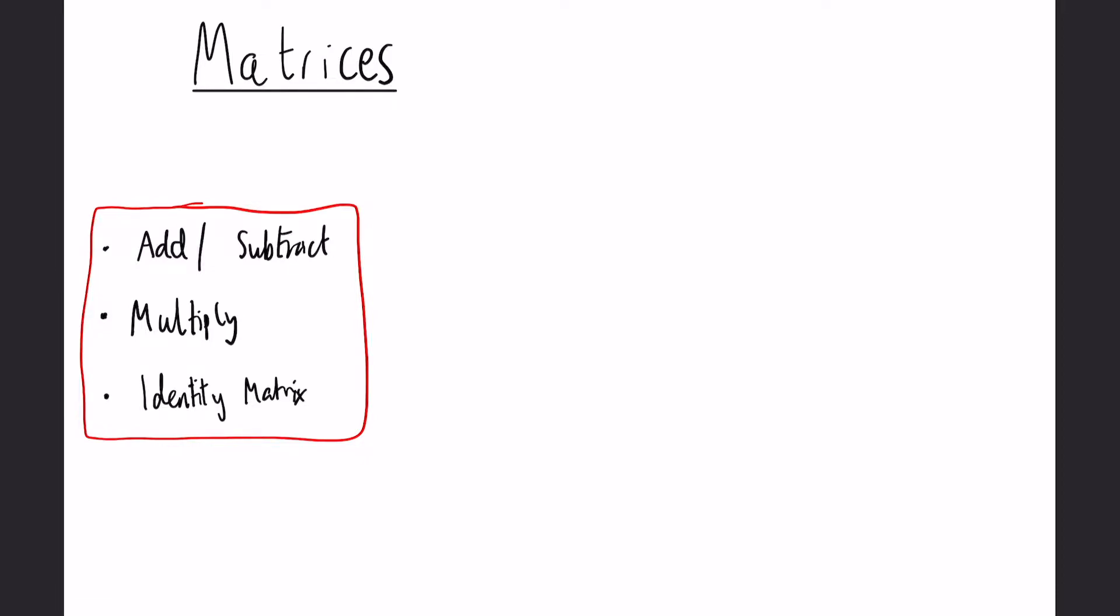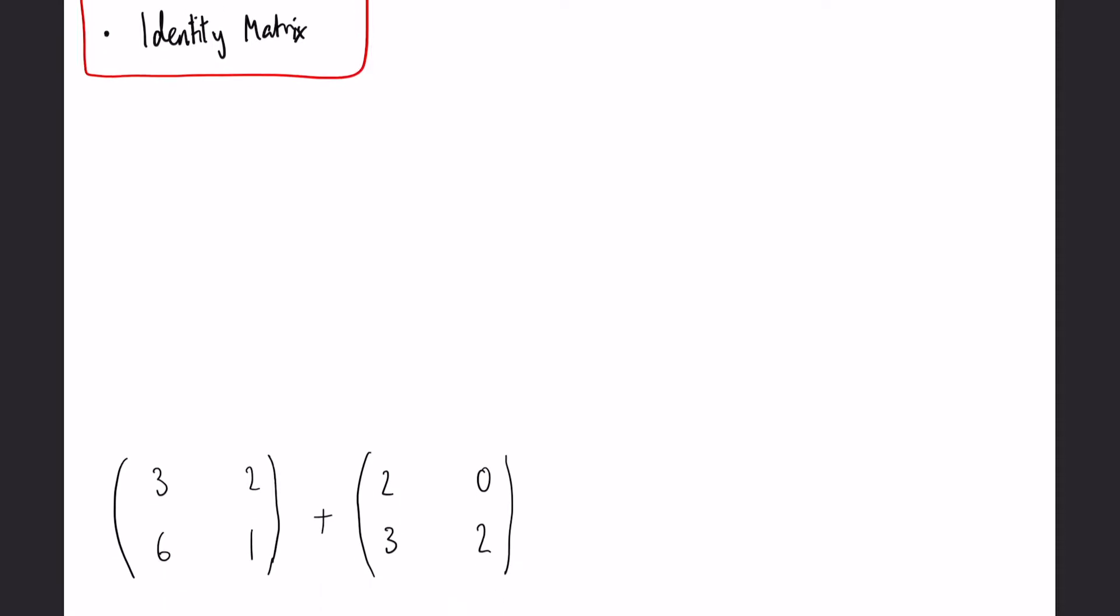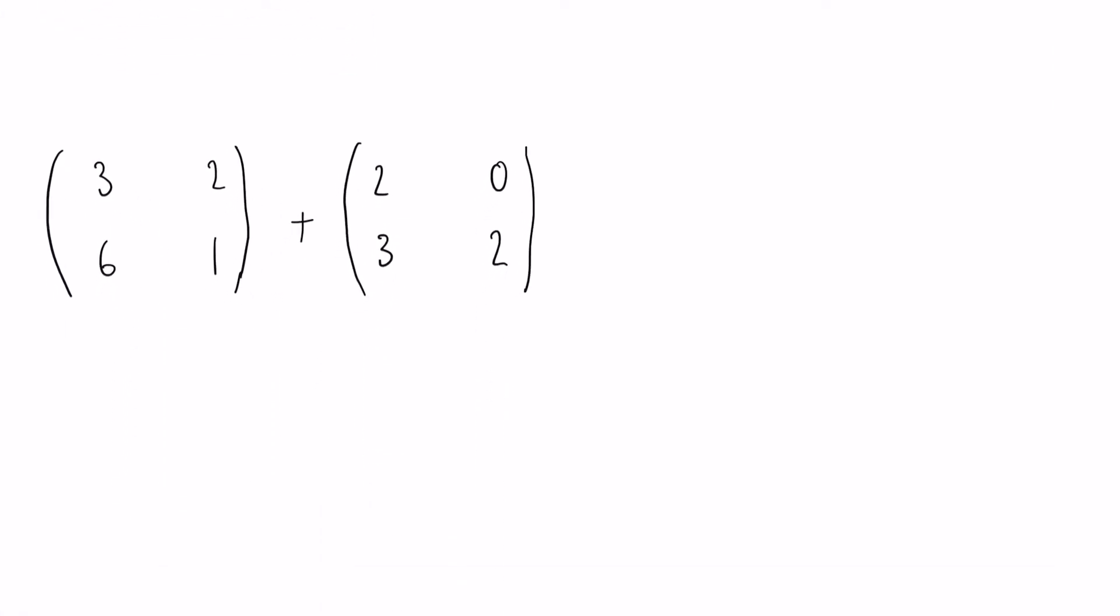First, adding matrices. We have two matrices here which are 2x2 matrices - they have two columns and two rows each. When adding, it's very important that the matrices are the same size because you simply add the numbers that are in the same position.